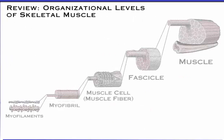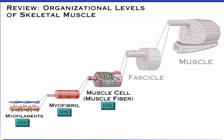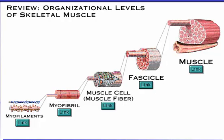Now that we have taken a skeletal muscle apart, let's put it back together, starting with its smallest building blocks — the myofilaments. There are two types of myofilaments: thick and thin. Many of these myofilaments bundled together make up a single myofibril. Numerous myofibrils are contained in a muscle cell or muscle fiber. In turn, many muscle cells are packed into a fascicle. And finally, many fascicles make up a whole skeletal muscle.